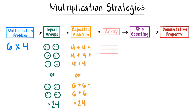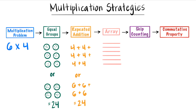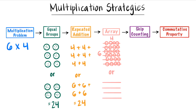Next we can make an array. We can make six rows of four. Let's make our six rows and label it six, and then we can add four to each row. Let's label the four at the top. Or we can make four rows of six — four rows, six in each one. Let's label the six at the top. If we were to count the circles in each of those arrays we would get 24 for both.